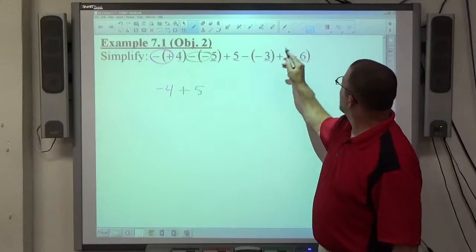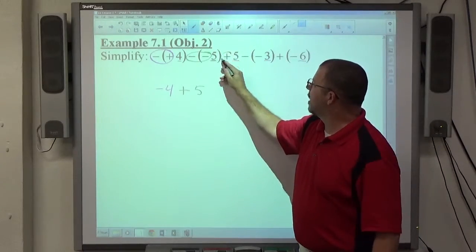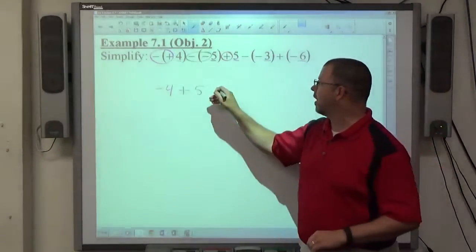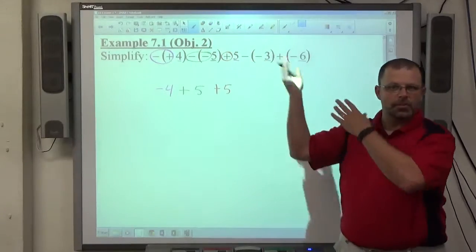Then we look in front of the next 5. There's only one sign in front of it. It's a plus. Zero negatives. Zero is even, so it's plus. Or you can just see it's plus.